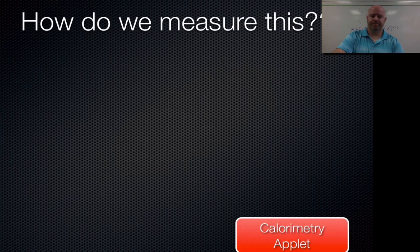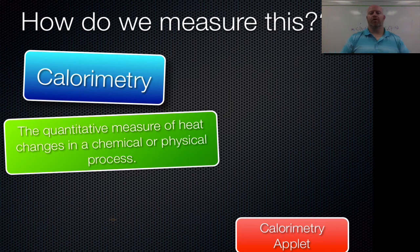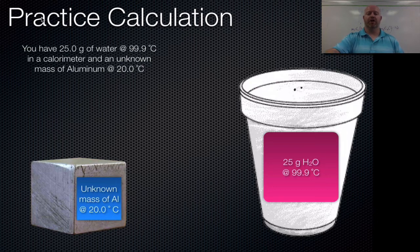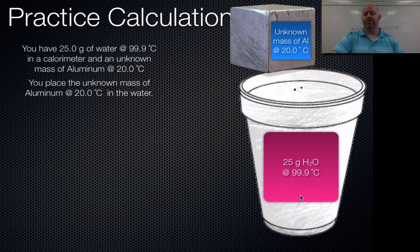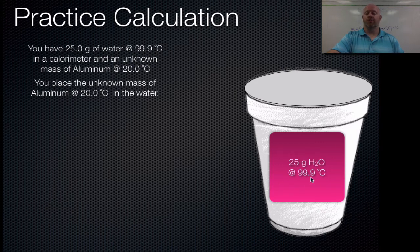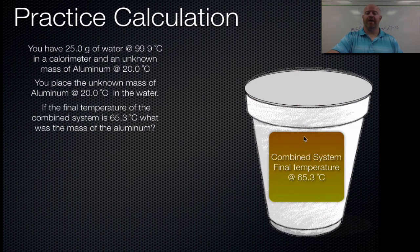Now for a practice problem. We have 25 grams of water at 99.9°C inside a coffee cup calorimeter, and an unknown mass of aluminum at 20°C. We can't measure the aluminum's mass. We place the aluminum into the calorimeter, seal it, and let the two substances come to thermal equilibrium. The water cools down, the aluminum warms up, and the combined system temperature at the end is 65.3°C.